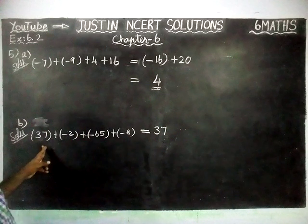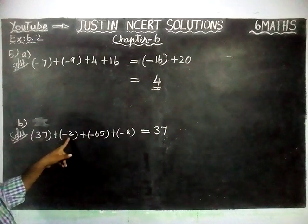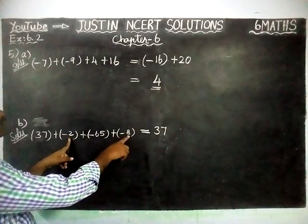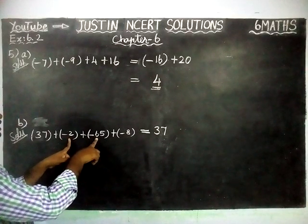37 as it is. Now, we are going to add these 3 numbers. First, we will add these numbers. 2 plus 8 is equal to 10. 10 plus 65 is equal to 75.